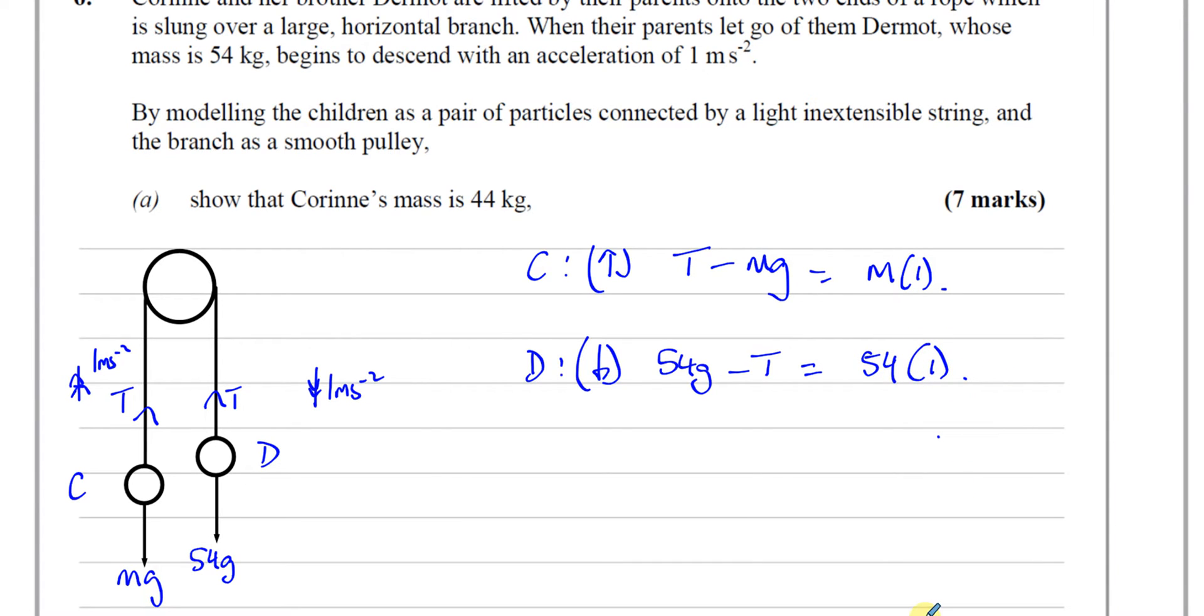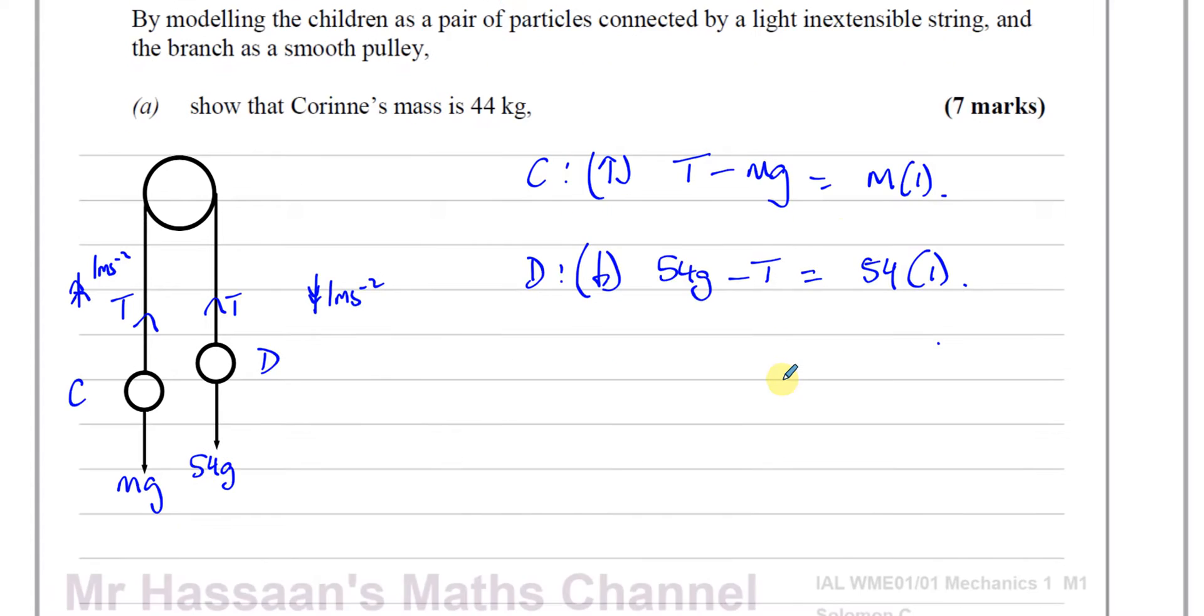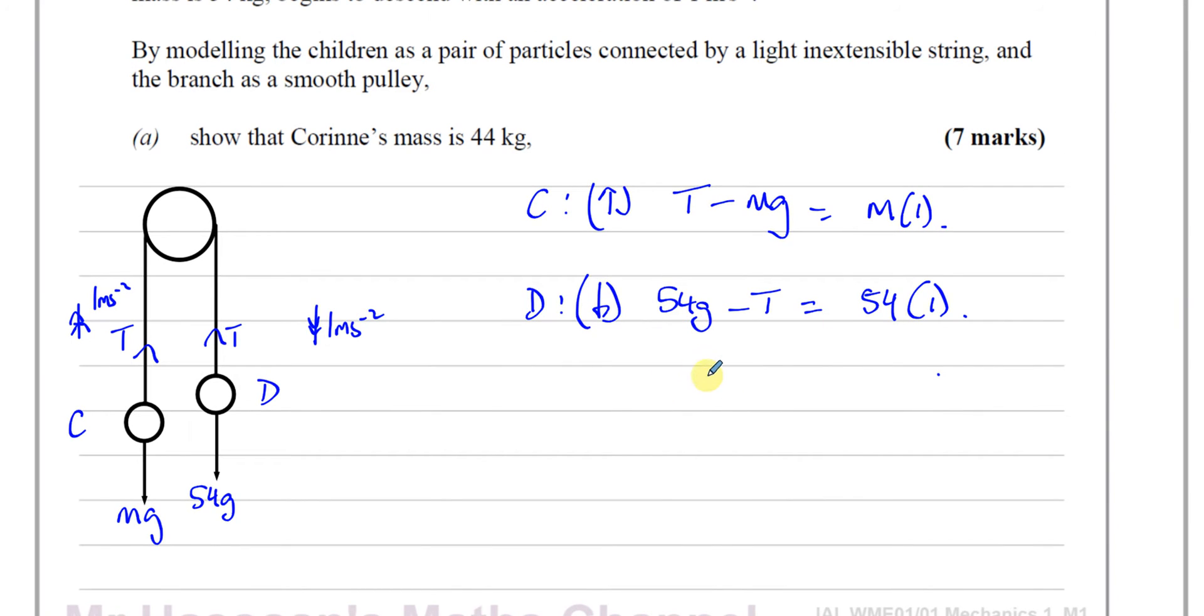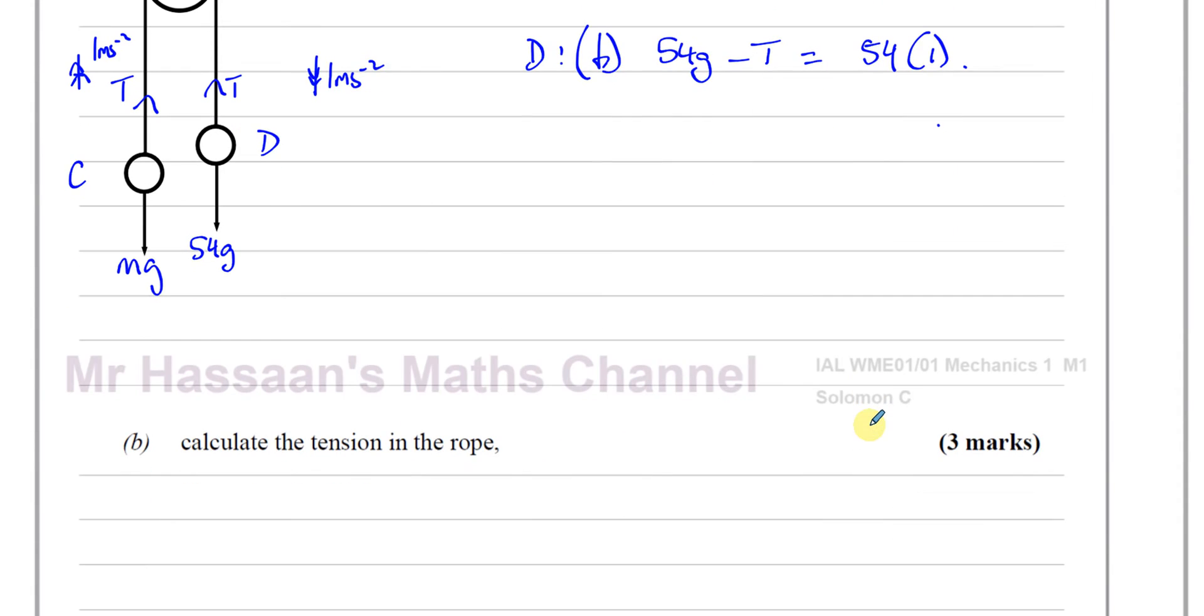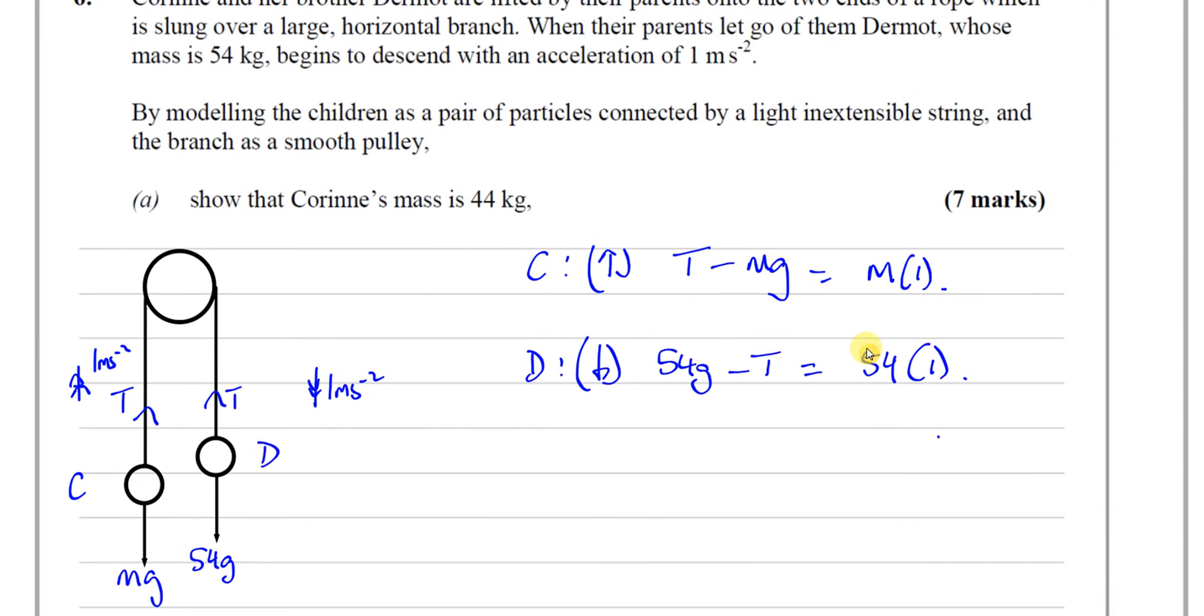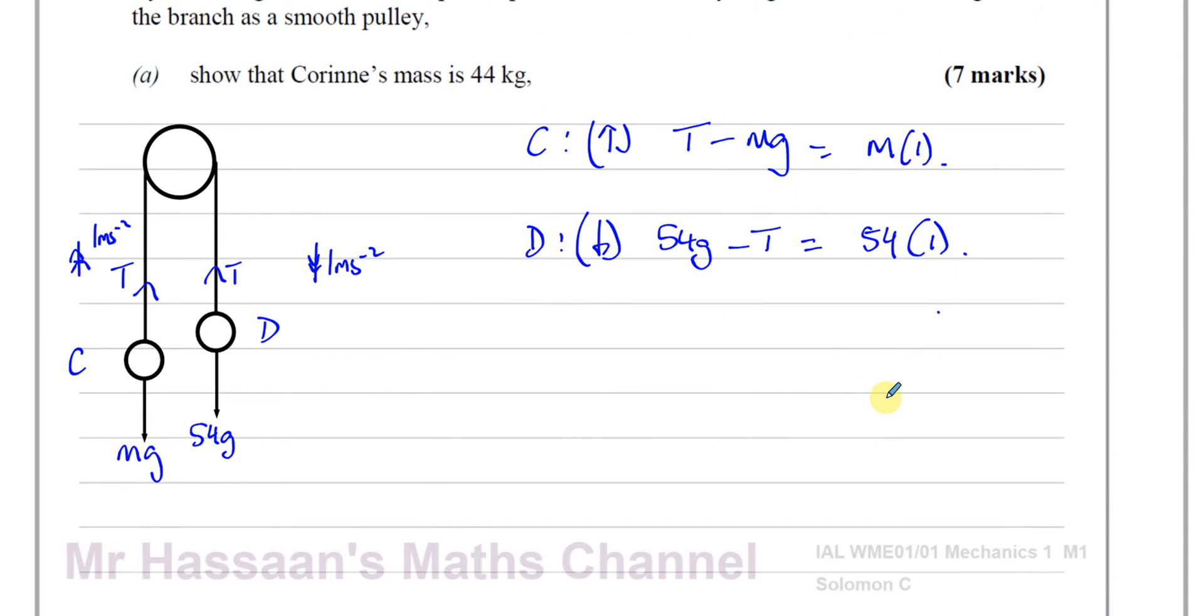There's two ways we can try to solve this problem. One of them is by finding what the tension is, and once I've found what the tension is, I can find what M is. That's the way I would normally do it. However, you see part B says calculate the tension in the rope, it's like a separate question. I'm sure if we calculated the tension first and then use that to calculate the mass, that would still be fine. But it's obvious that they've intended us to answer this in a slightly different way.